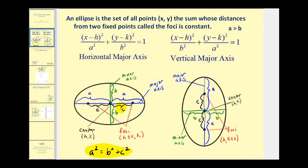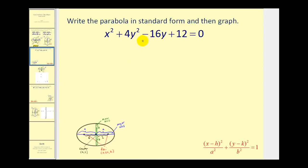All the information is the same whether we have a horizontal or vertical major axis, except to find the foci: with a horizontal major axis, you add and subtract c from the x-coordinate of the center, while with a vertical major axis, you add and subtract c from the y-coordinate of the center. The goal of this video is to write an ellipse given in general form in standard form so we can graph it. The first thing we're going to do is group the x terms and the y terms together and move the constant to the right side.